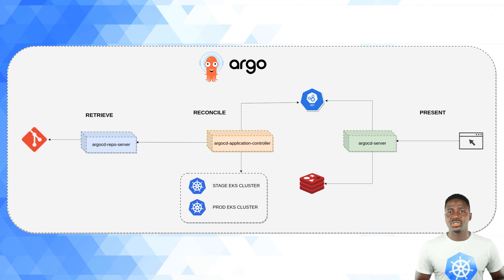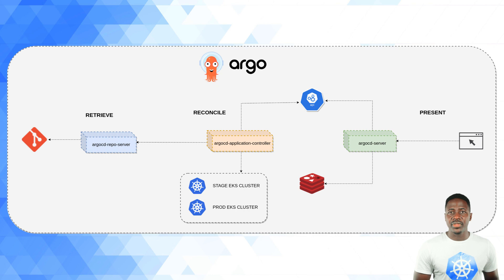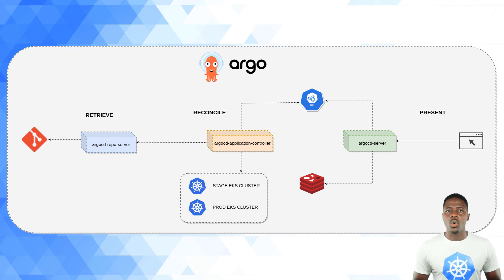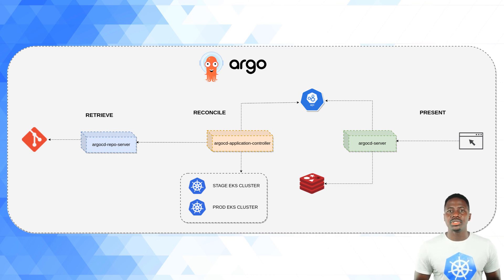The next phase is the Reconcile phase, and this is probably the most complex and where a lot of the heavy lifting takes place. This phase compares the resources fetched by the Argo CD repo server and the live manifests that reflect the current state of the target cluster. The responsible component will then reconcile the differences and any deviations to ensure that the cluster's state matches the desired state. The Argo CD application controller is responsible for handling this.